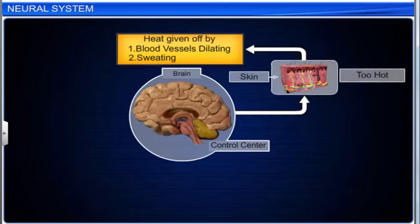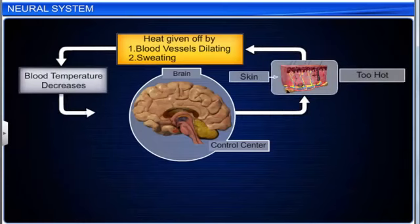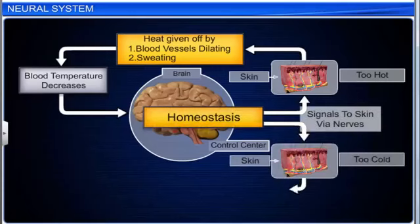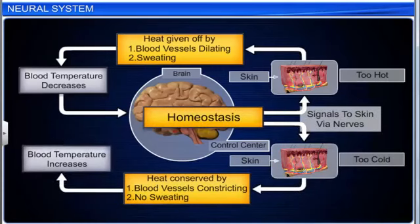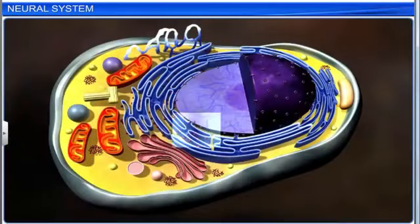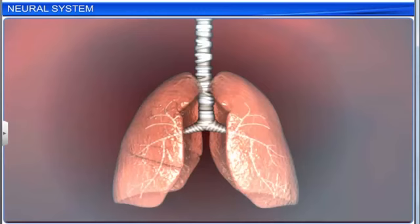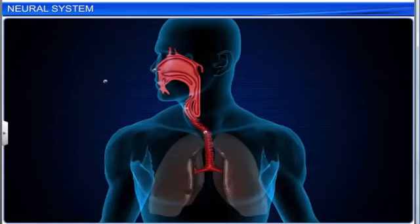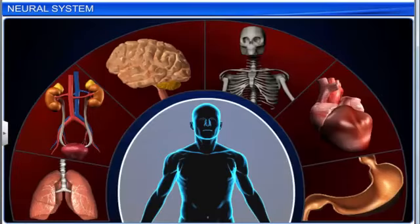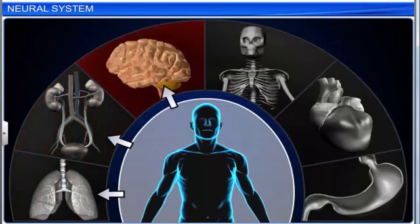Coordination between various organs and systems of the body is crucial to homeostasis, or body stability. The cells form tissues, which in turn form different organs. Organs further combine to form different systems. Each of these organ systems is specialized to perform specific functions, and shows interactions and interdependency.